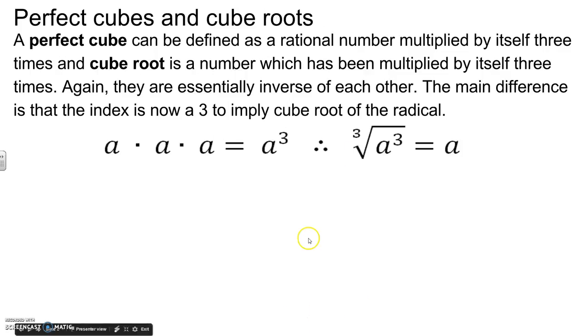The main difference is now that the index is 3 to imply the cube root. And now notice here that it's different in the notation. Here we have it in the index. So a times a times a is a cubed. Therefore, the cube root of a cubed is a.